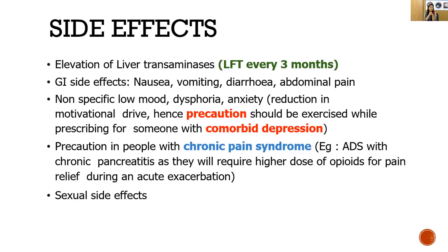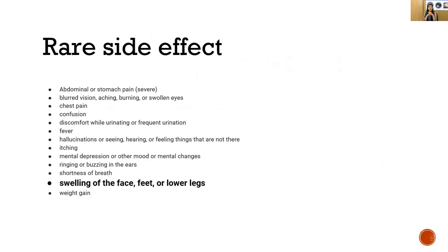Precaution in people with chronic pain syndrome: sometimes physicians prescribe tramadol or other opioid preparations to reduce pain. If such a patient is also taking alcohol and you prescribe naltrexone, it will precipitate severe opioid withdrawal. If the patient is taking any opioid agonist, you must be very cautious. Rare side effects of naltrexone include abdominal pain, blurred vision, swollen eyes, chest pain, confusion, discomfort urinating or frequent urination.